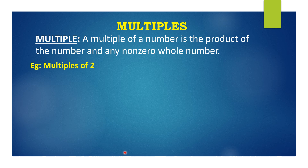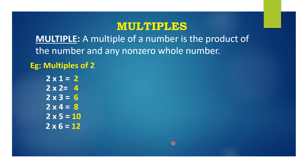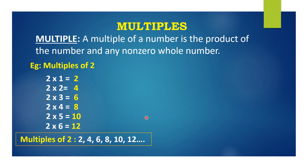Let's consider an example — multiples of 2. We have: 2×1=2, 2×2=4, 2×3=6, 2×4=8, 2×5=10, 2×6=12. If you observe here, 2, 4, 6, 8, 10, 12 and so on are known as the multiples of 2. We are multiplying the number with a non-zero whole number, so the results we are getting are known as the multiples. The multiples of 2 are 2, 4, 6, 8, 10, 12, 14, 16, 18 and so on.